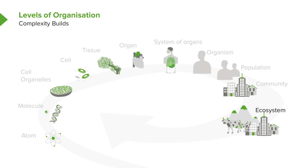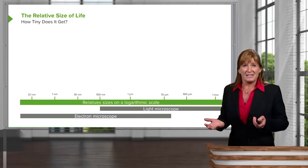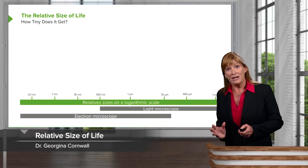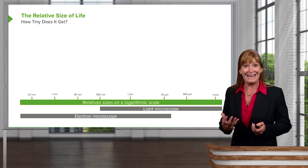Ecosystems come together to form biomes. And finally, at the largest level of life, we look at the biosphere. It's important to think about the relative sizes within biology, because often we'll see ourselves spending time at such a small, microscopic level that it becomes hard to relate it to what we're learning.